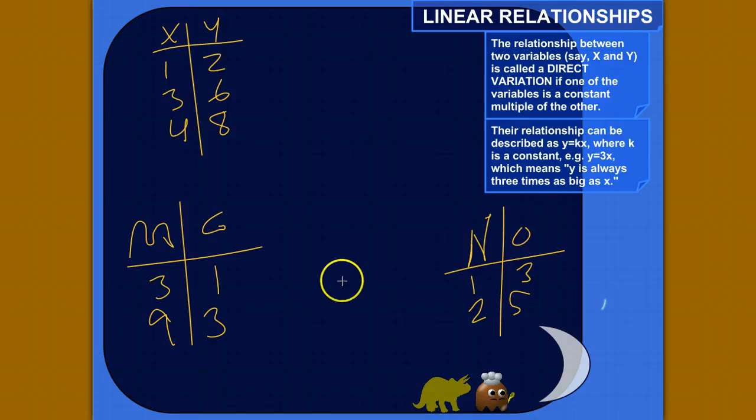Hello, so I want to show you what a direct variation is, or what that means. Just setting up the basic idea here, we would say the relationship between two variables, and the standard ones are x and y, is called a direct variation if one of the variables is a constant multiple of the other.